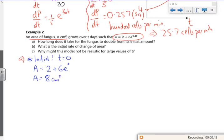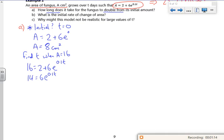So now what I want to do, because I want to find how long it takes to double, so I want to find t where A is 16. So 16 is 2 plus 6, e to the power 0.1t. Take the 2, because 14 is 6, e to the power 0.1t. Divide by 6,